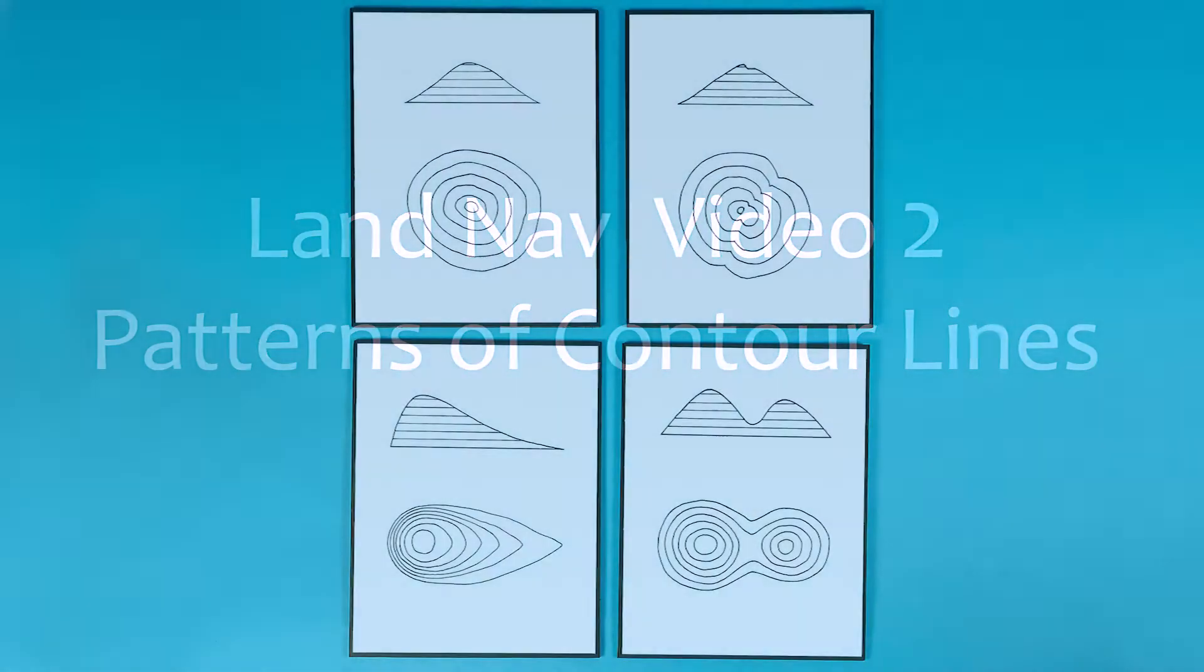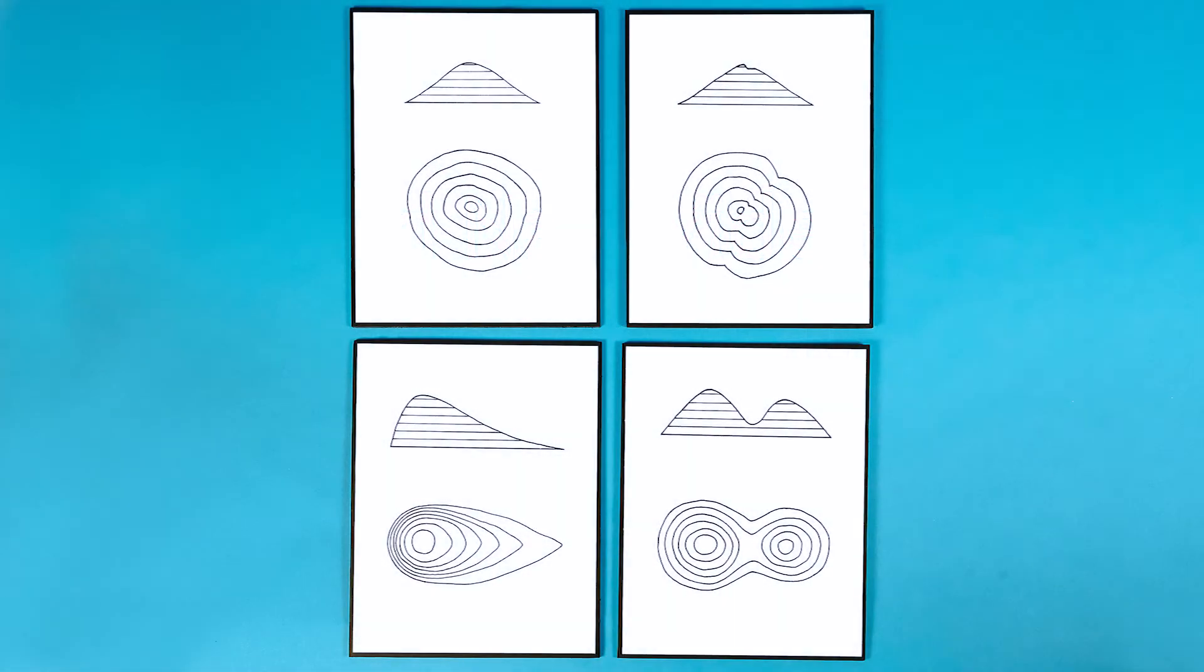In this video, we'll show four different patterns made by contour lines on the map. And once you know these patterns, you can visualize what the land will look like in the field.